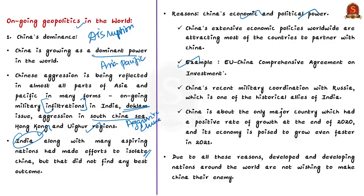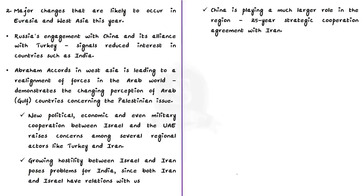According to the author, this is an indication that Europe values its economy more than its politics. China is also strengthening its military coordination with Russia, which is one of the historical allies of India. The author mentions that China is the only major country which had a positive rate of growth at the end of 2020 and its economy is poised to grow even faster in 2021. Due to all these reasons, developed and developing nations around the world are not wishing to make China their enemy, and this has shattered all hope that China would remain isolated in 2021.